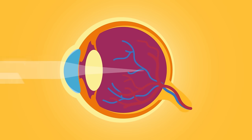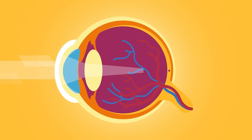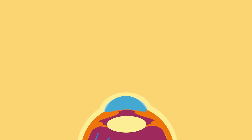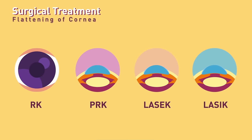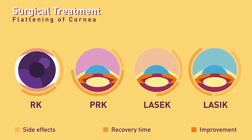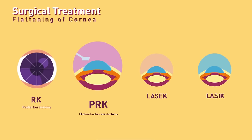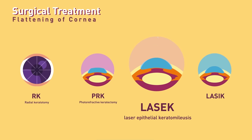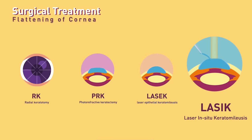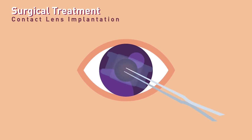This can be done by using either a diverging lens — like glasses or contact lenses — or some surgical procedure. Surgical treatment involves flattening the central part of the cornea, using methods that were advanced to reduce side effects and recovery time. Surgeries in this category include radial keratotomy, photorefractive keratectomy, laser epithelial keratomileusis, and laser in situ keratomileusis. Other surgical options are lens extraction and contact lens implantation.